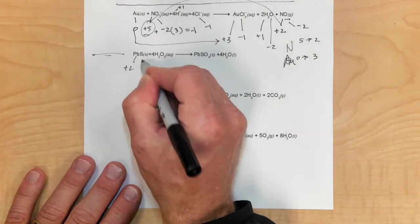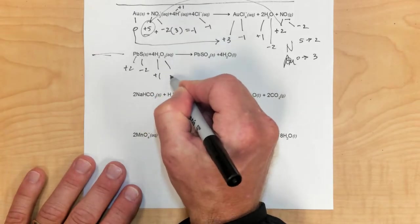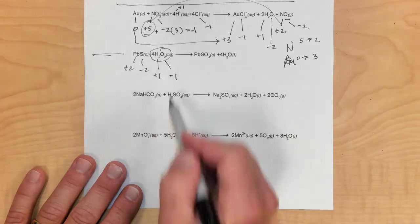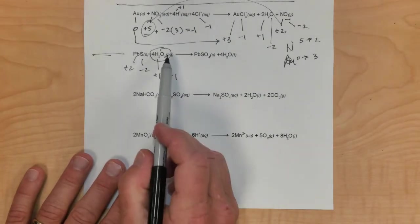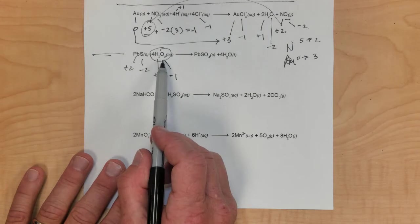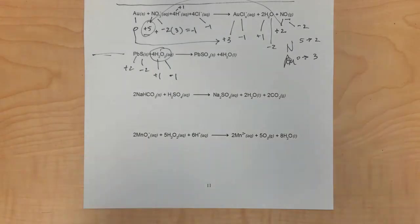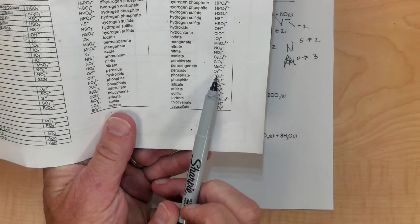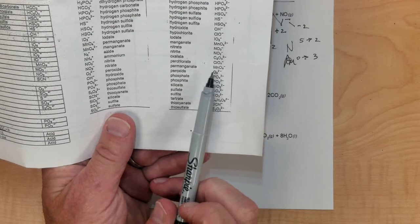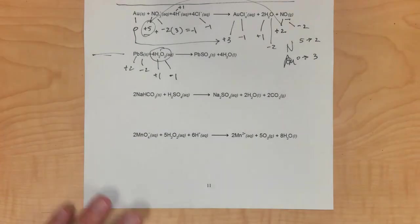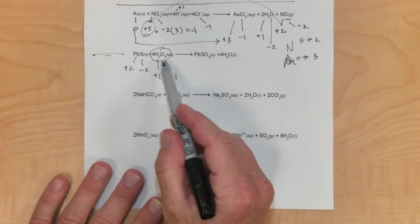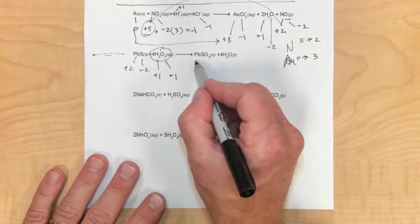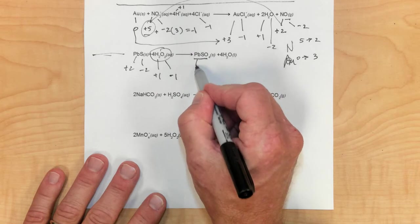Lead is plus 2, sulfur is minus 2, hydrogen is positive 1, oxygen — careful here — this one is negative 1, because you can notice it's H2O2. It's one of the few exceptions where oxygen is negative 1; it's the peroxide ion. The peroxide ion O2²⁻ means each individual atom has a negative 1 charge. You recognize it in hydrogen peroxide or in something else labeled peroxide, but it's very rare.